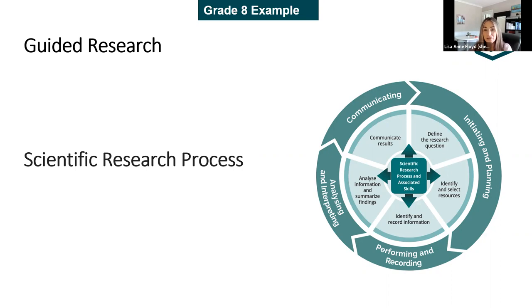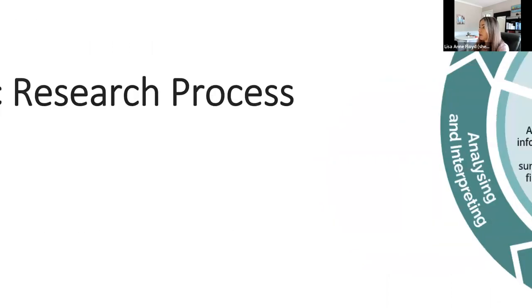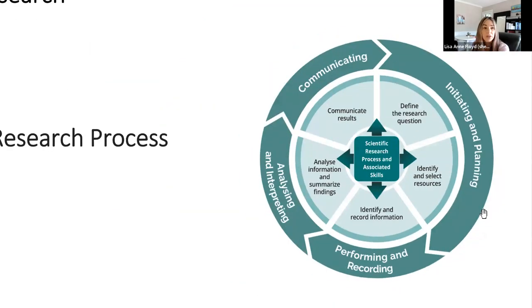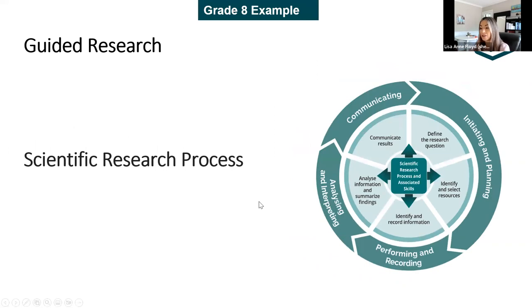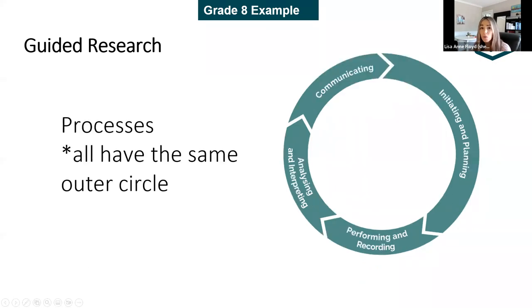The scientific research process — taken from the Ontario curriculum documents — involves coming up with a research question, which is very challenging at all levels of education. Once you define that research question, you identify and select resources, record information, analyze and summarize findings, then communicate results. This process is listed in the curriculum context section.